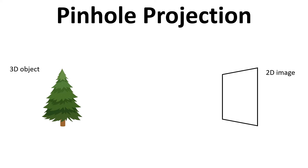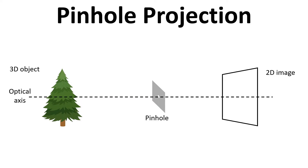We're going to start by talking about pinhole projection, which is the simplest way in which we can form an image on the screen. We place a pinhole between the object and the image plane and we don't allow any other light to pass from the object to the image apart from through the pinhole. We're going to draw in the optical axis — this is the dashed line that goes through the pinhole — and then we'll see how light rays travel from the object to the image.